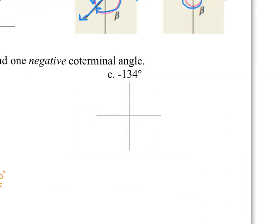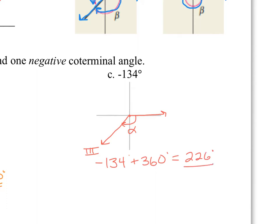If the given angle is negative, rotate in a clockwise direction with the vertex in the middle. Negative 134 degrees places the terminal ray down into quadrant 3, just shy of halfway. To find coterminal angles: −134 + 360 = 226° (positive answer); −134 − 360 = −494°. That's determining positive and negative coterminal values in degree form.